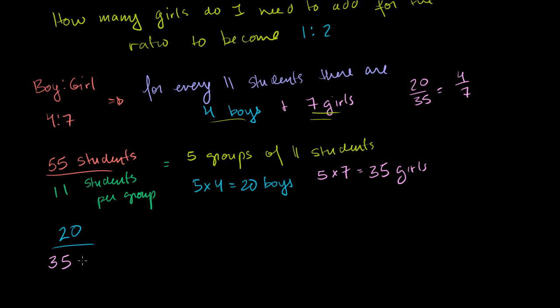And I'm going to add some girls to the classroom. So I'm going to add some girls to the classroom. And my new ratio, after I add these g girls to the classroom, my new ratio is going to be 1 to 2.